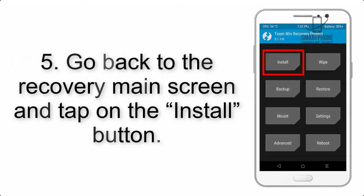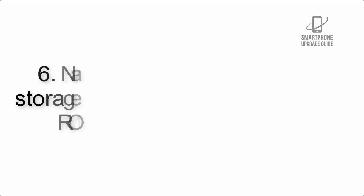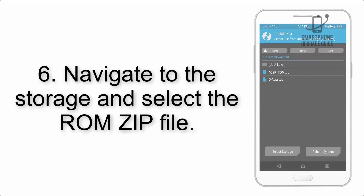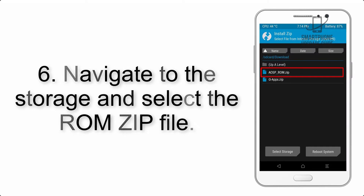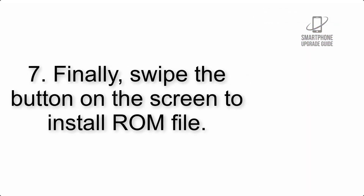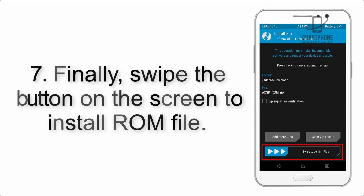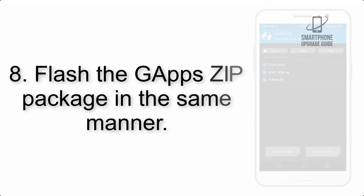Step 5: Go back to the recovery main screen and tap on the Install button. Step 6: Navigate to the storage and select the ROM zip file. Step 7: Finally, swipe the button on the screen to install the ROM file.